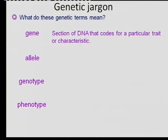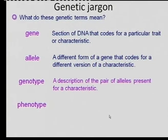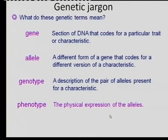So these are all the terms. To recap: a gene is the part of DNA that codes for a specific characteristic. An allele is an alternative form of a gene. The genotype is a description of the pair of alleles present for a characteristic. The phenotype is the outer or external appearance — the things you can see. The genotype you can't see; it's on the genes. But the phenotype is those external characteristics you can see.